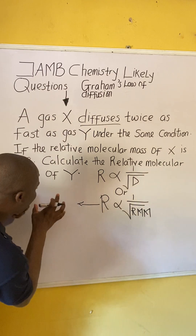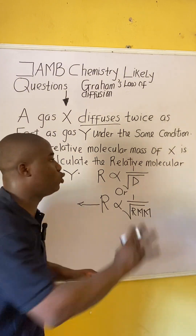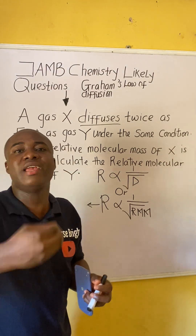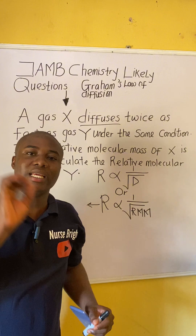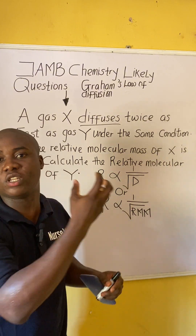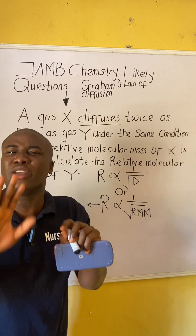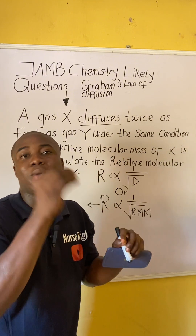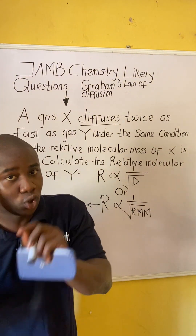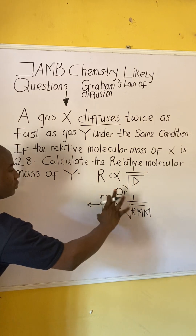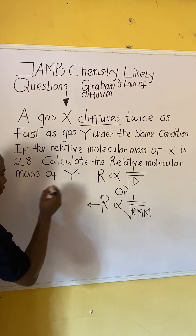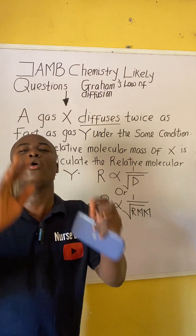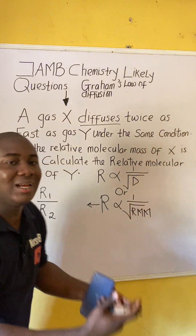The formula we derive is: R1 divided by R2 equals the square root of RMM2 divided by RMM1. Gas laws generally relate two sets of gases, which is why we have subscripts 1 and 2. This law is inversely proportional, so as we go from 1 to 2 on the rate side, we go from 2 to 1 on the RMM side.